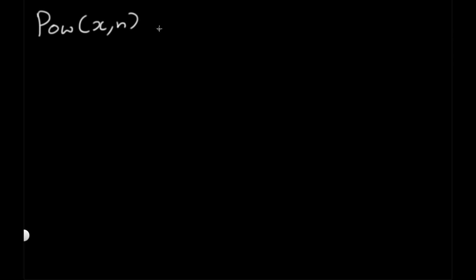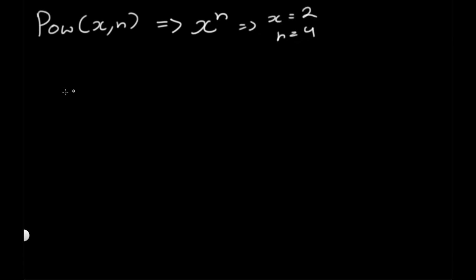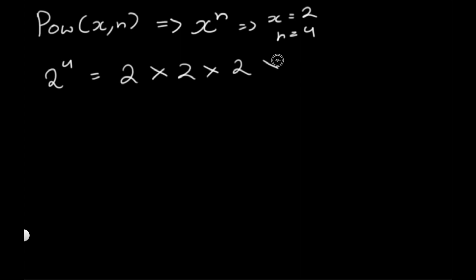We're given two variables x and n, and we need to output the value of x to the power of n. For example, if x is equal to 2 and n is equal to 4, that's nothing else but 2 to the power of 4, which is 2 multiplied by 2 multiplied by 2 multiplied by 2.